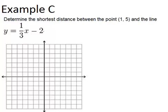Now we're going to look at example C, which says determine the shortest distance between the point (1, 5) and the line y equals 1/3x minus 2. So let's start by putting both of those points and lines onto the graph. So the point (1, 5).